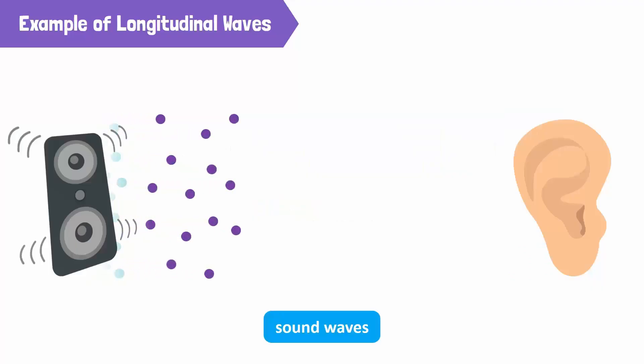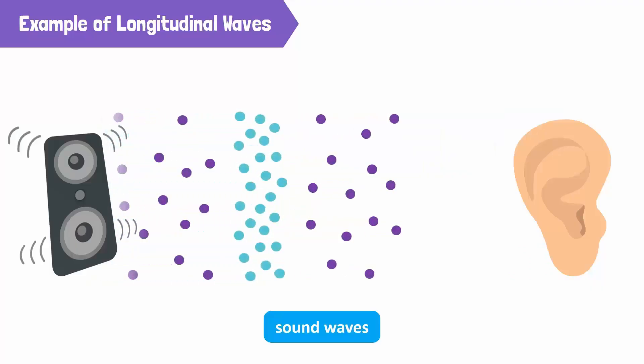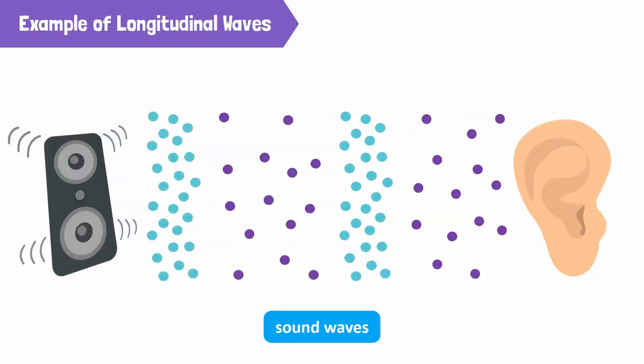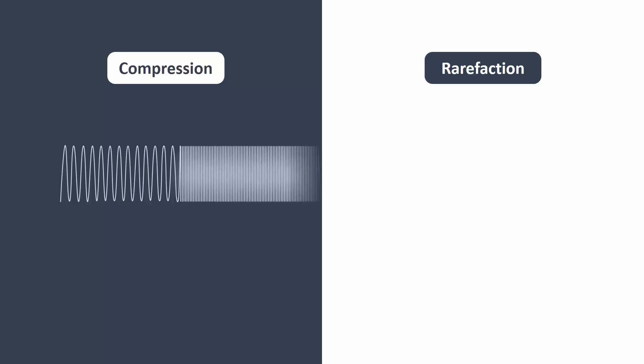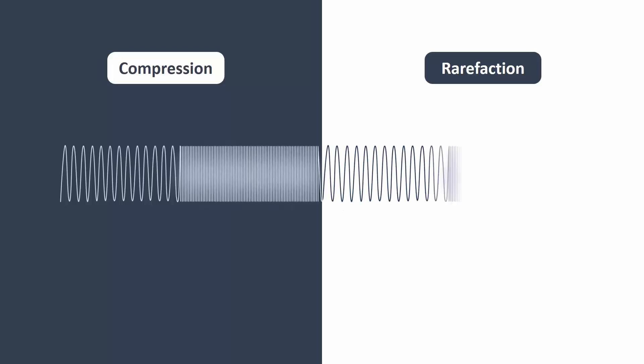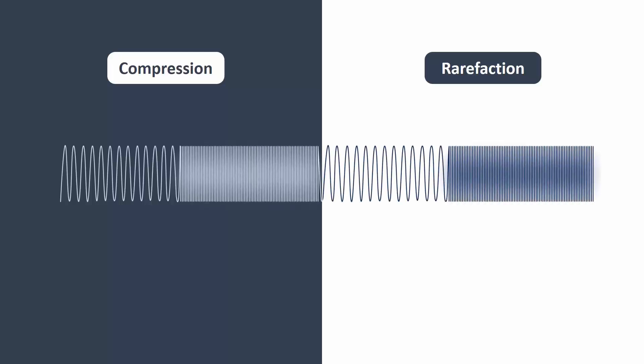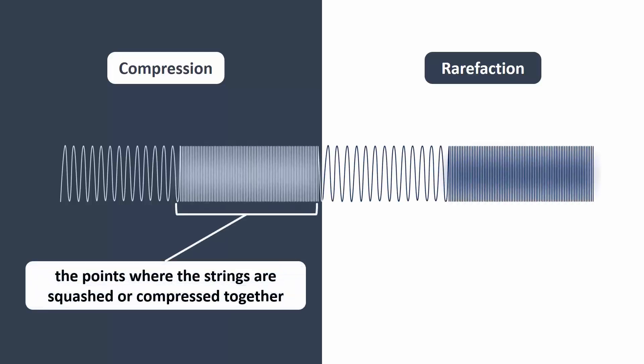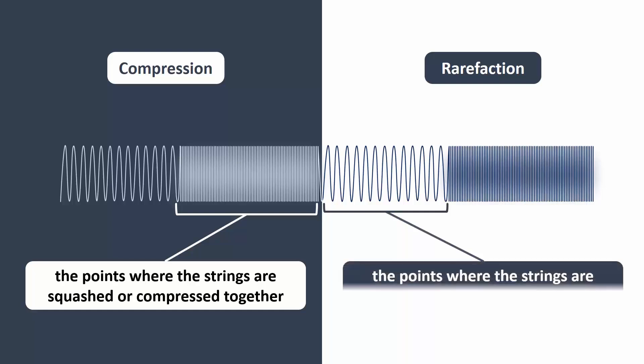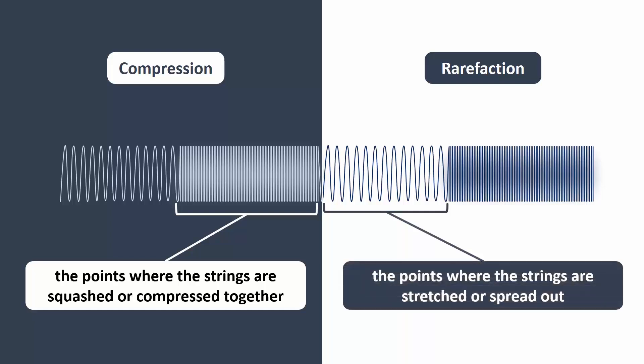Sound waves are an example of longitudinal waves. In a longitudinal wave, the points where the strings are squashed or compressed together are called compressions. The points where the strings are stretched or spread out are called rarefactions.